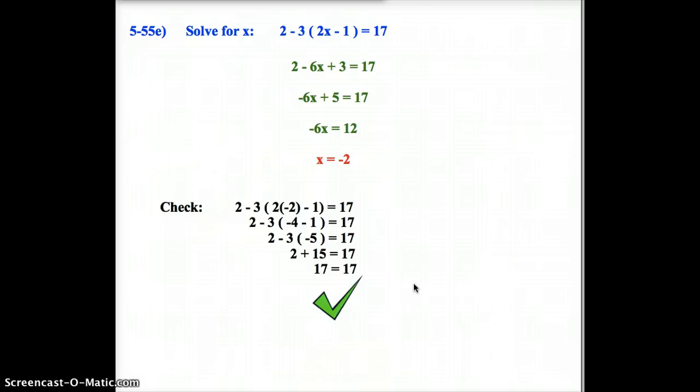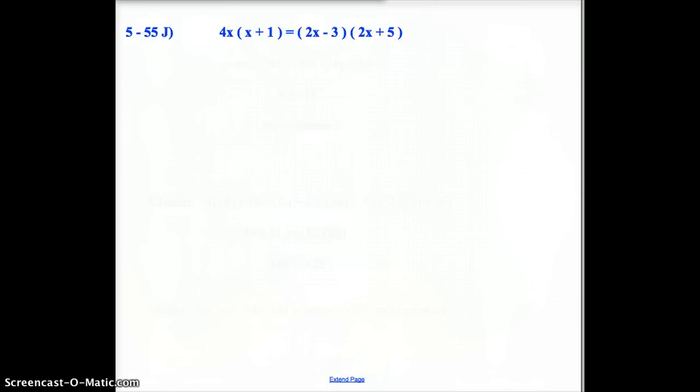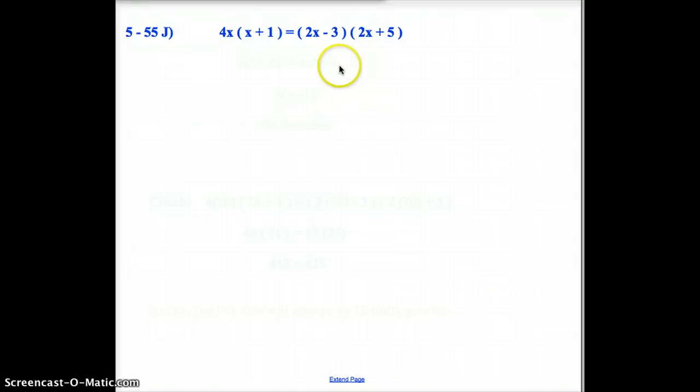If at any point you did not understand what I just went through here, please pause and rewind the video and re-look at what you're doing. I'm going to start assuming that you're getting really good at these here very quickly. So I will go through one more example, which is probably a little more difficult one. It is letter J. It also introduces something to us that I want to go over with you. So J is 4x times the sum of x plus 1 equals the sum of 2x minus 3 times the sum of 2x plus 5.